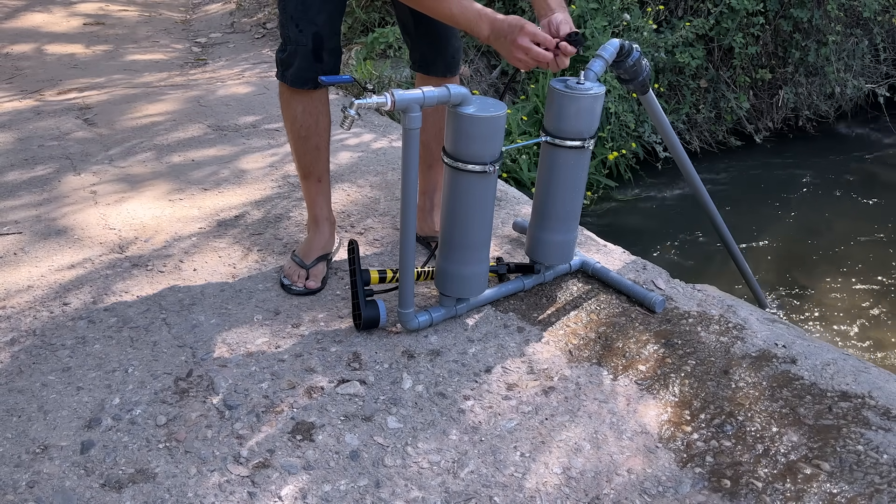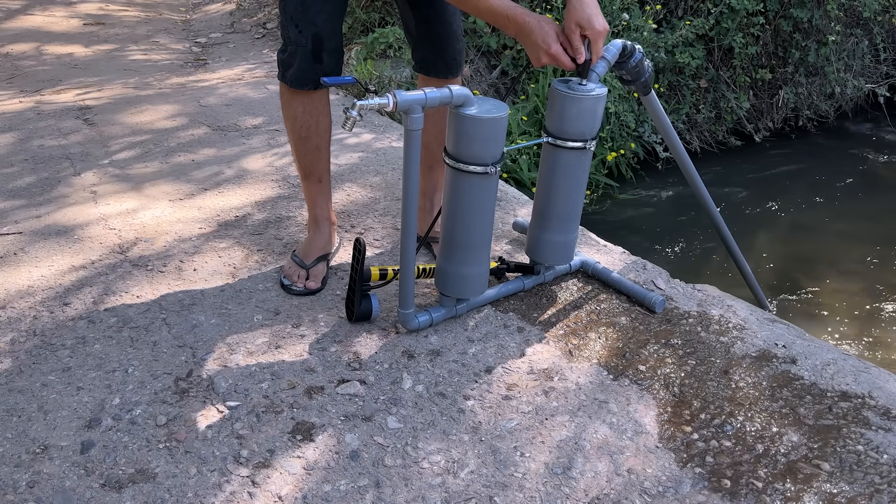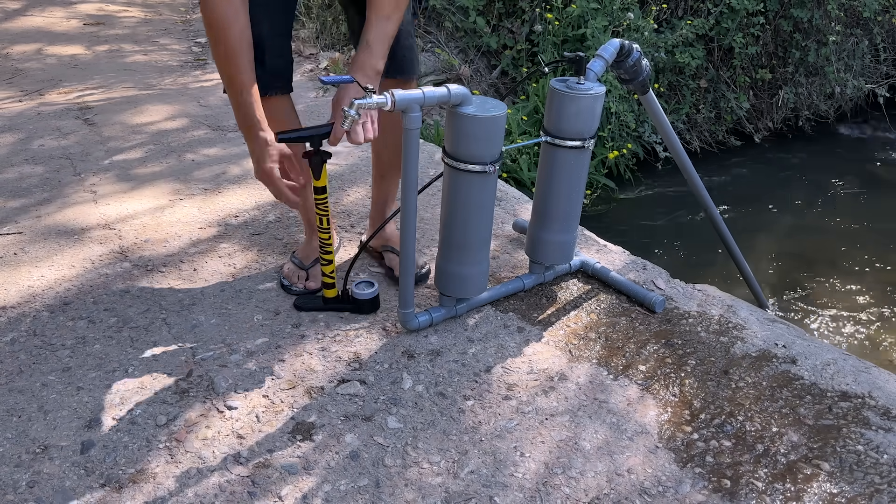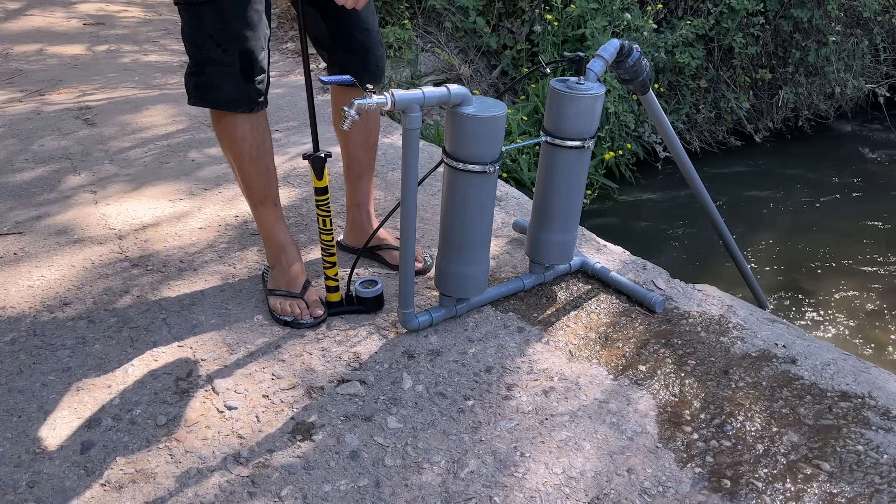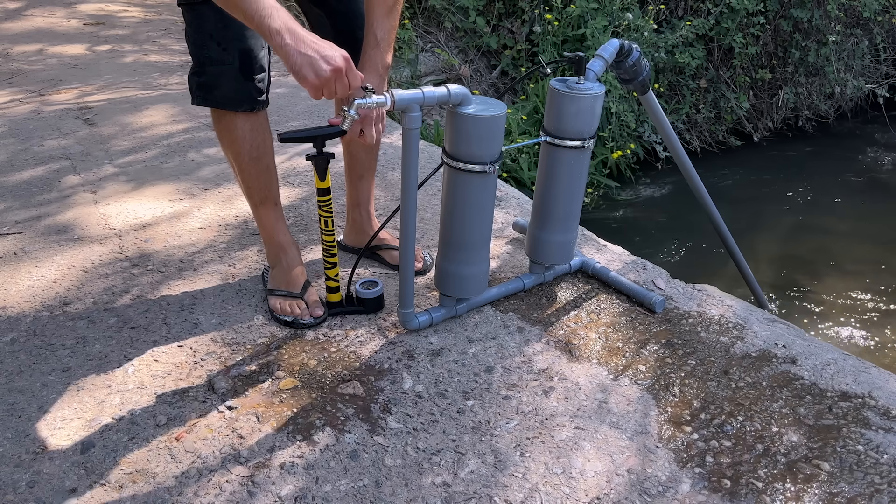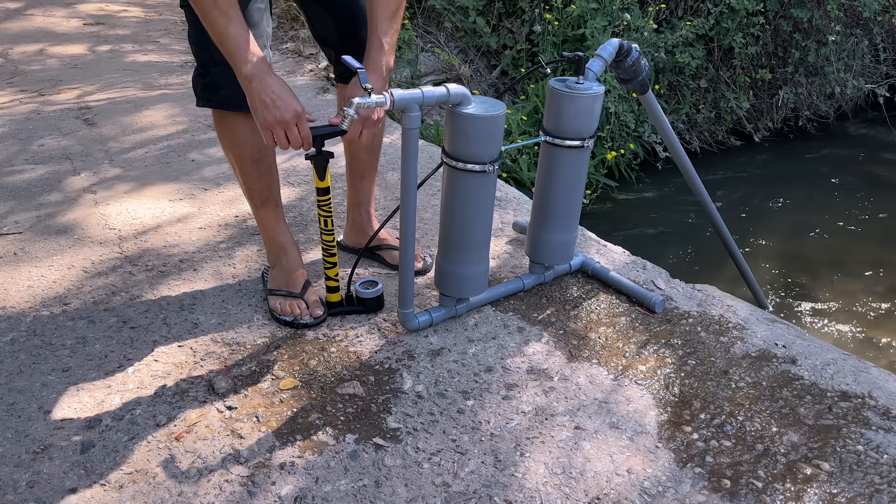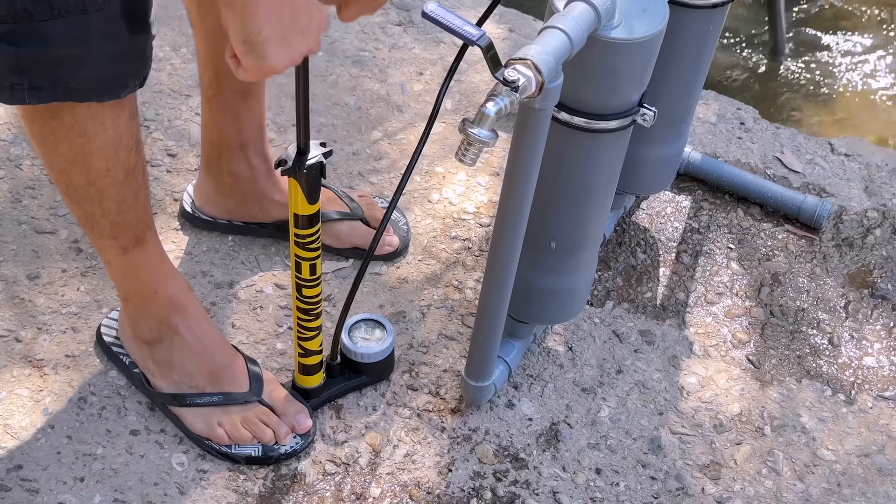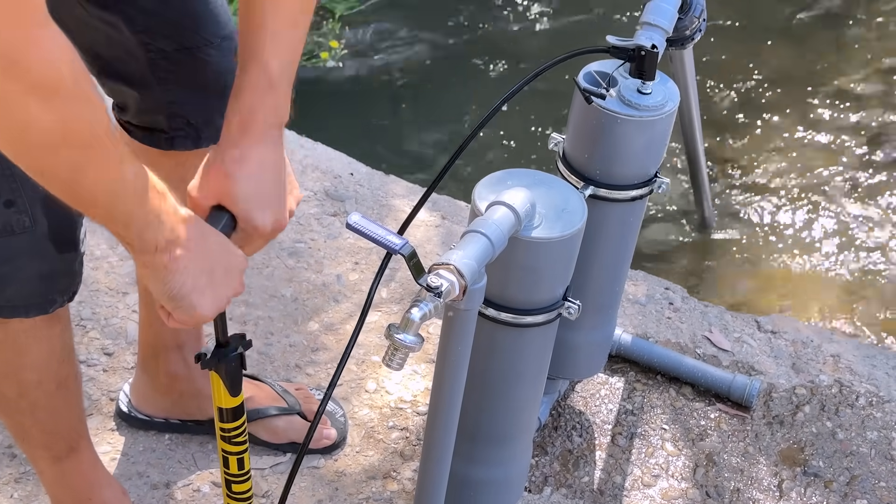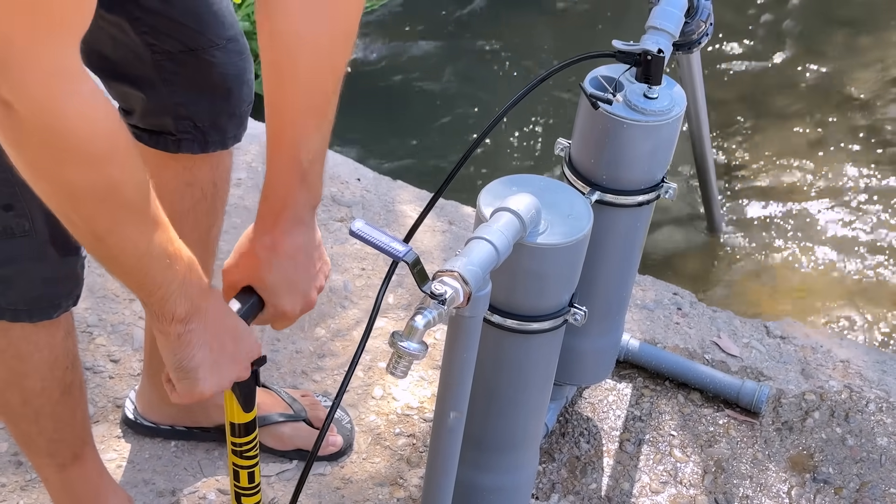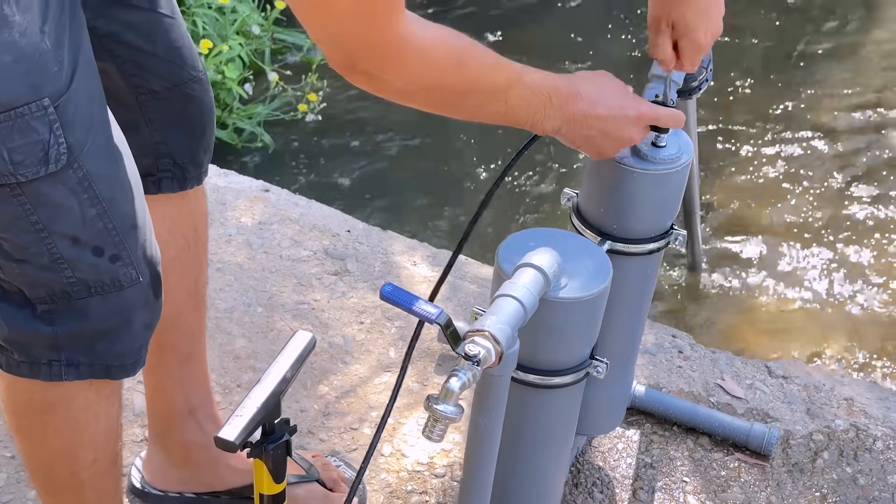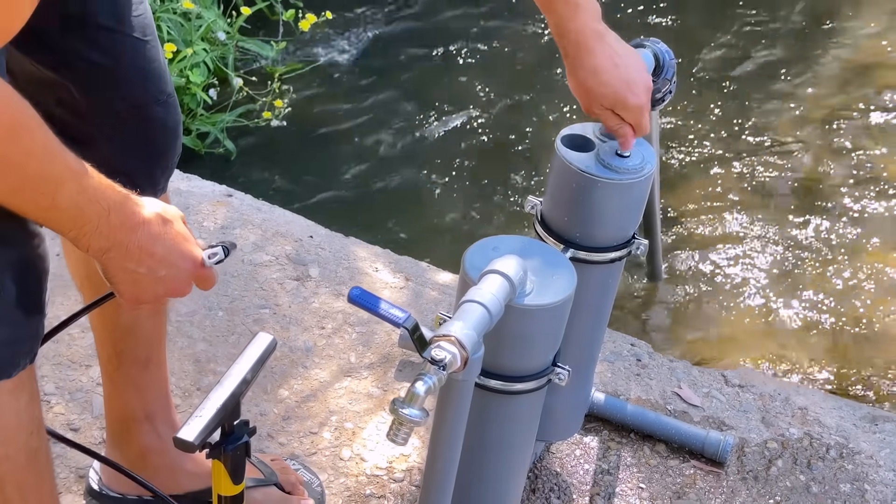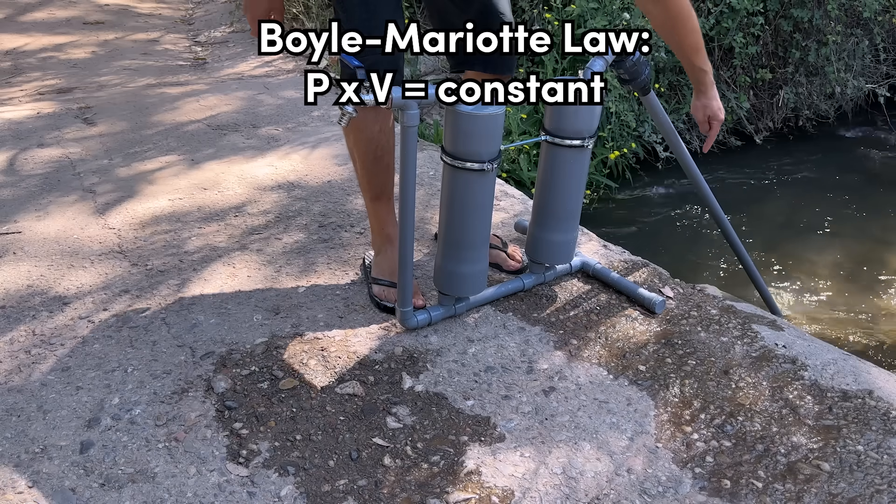We connect a manual air pump and see that when we pump, water comes out. We close the tap and pressurize the system. This initial pressure will act as an invisible piston on the liquid column. Compressed air, according to the Boyle-Mariott law, transfers its energy to the liquid by expanding. Pressure by volume equals constant.